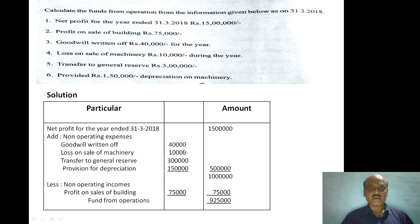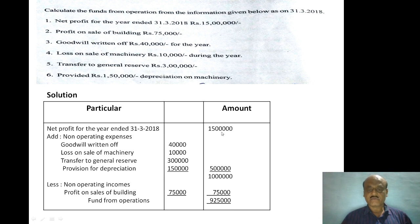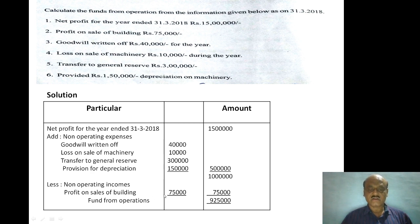The profit on sale of building is a non-operating income, so it goes on the deduction side. Sale of a building is a capital income and therefore a non-operating income. We deduct 75,000 rupees for the profit on sale of building.